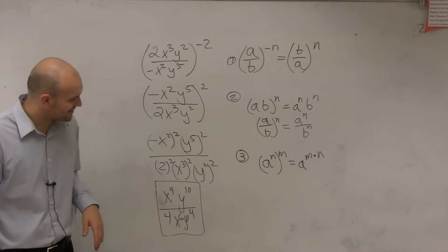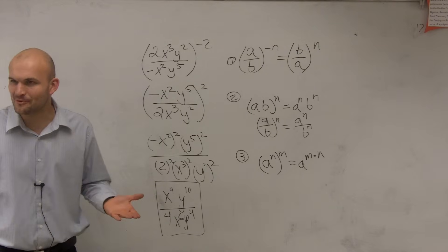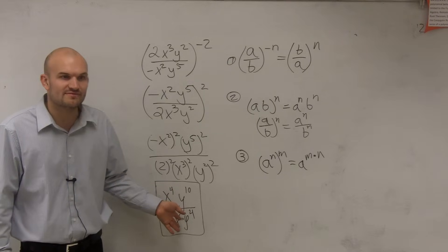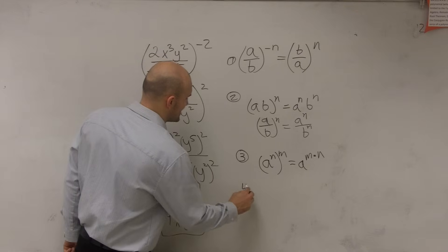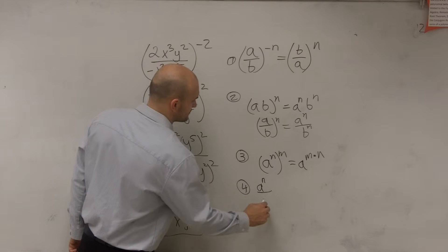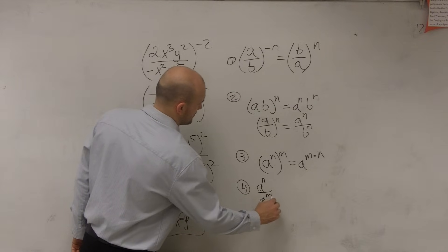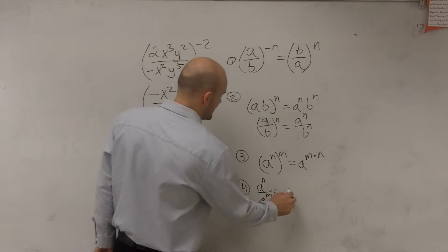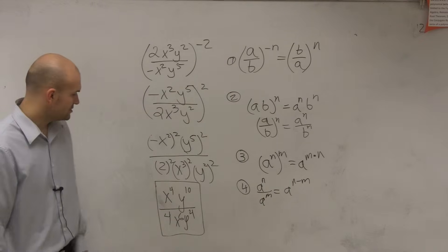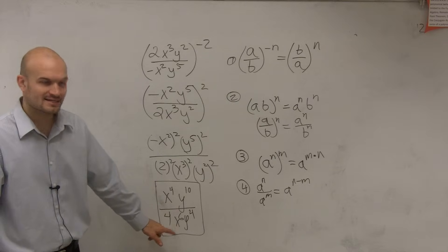So our last one that we're going to look into, it's been a while, it's been a couple of weeks since we were looking at these. Yeah, now we can simply just go through with the division. Our last exponent property states that now when you have an exponent dividing, then you do a to the n minus m.